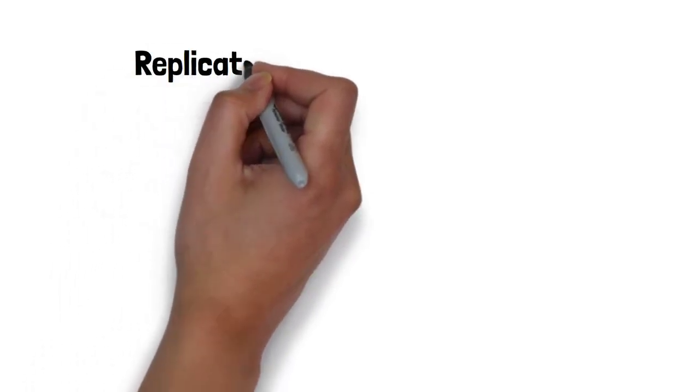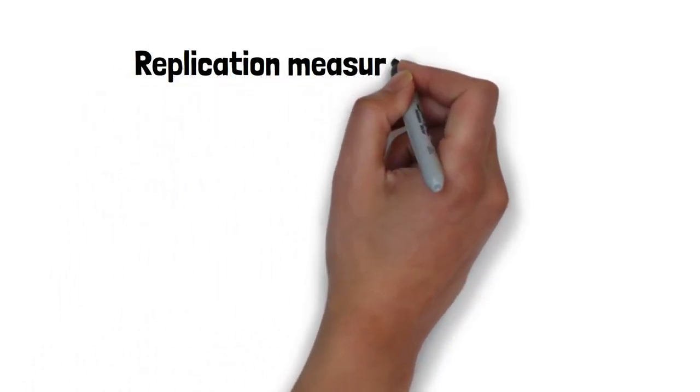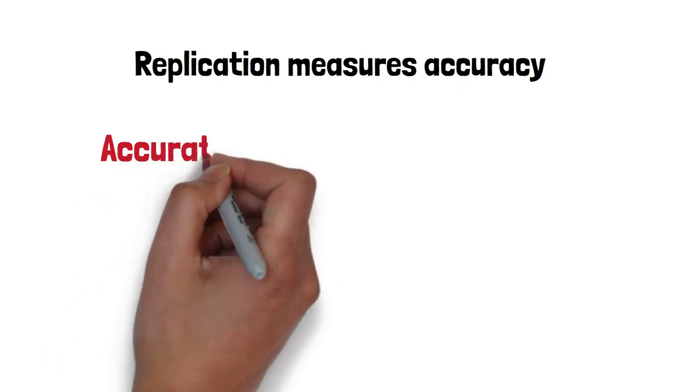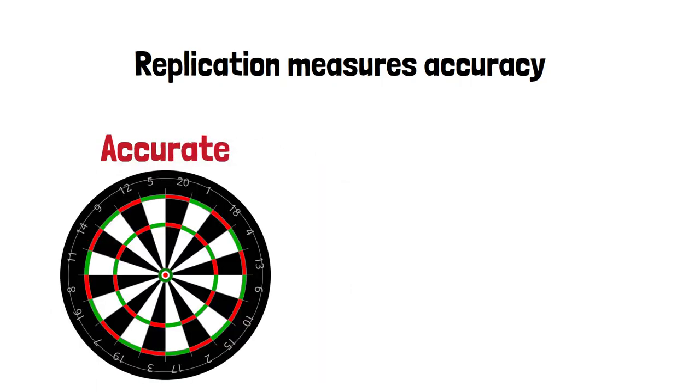Now let's use some simple examples to help you understand the difference between accuracy and precision. Remember, replication measures accuracy. Repetition is a measurement of precision. We are going to use a dartboard as an example.